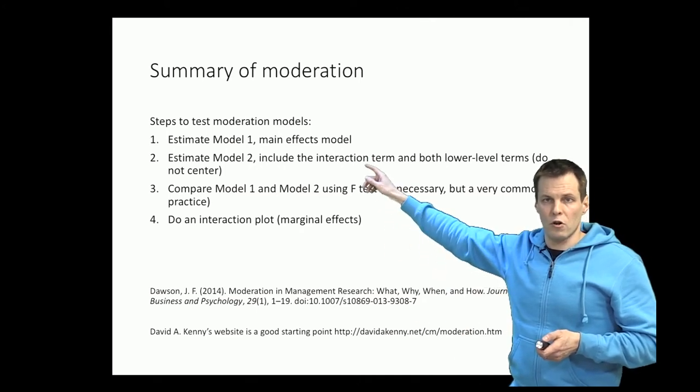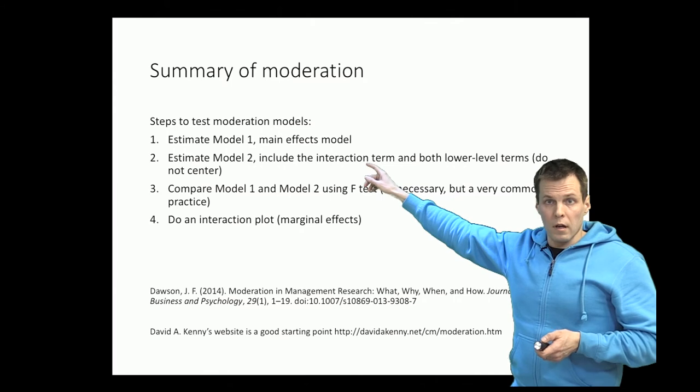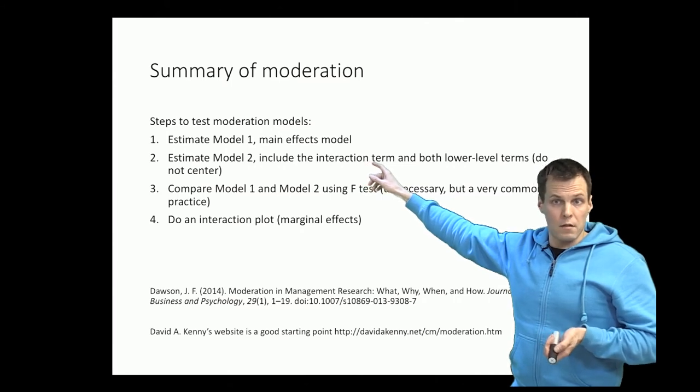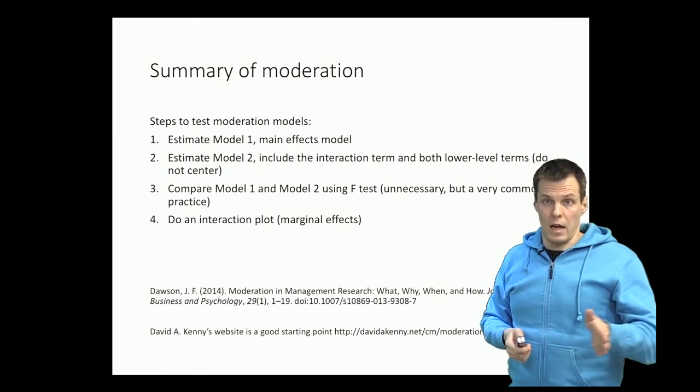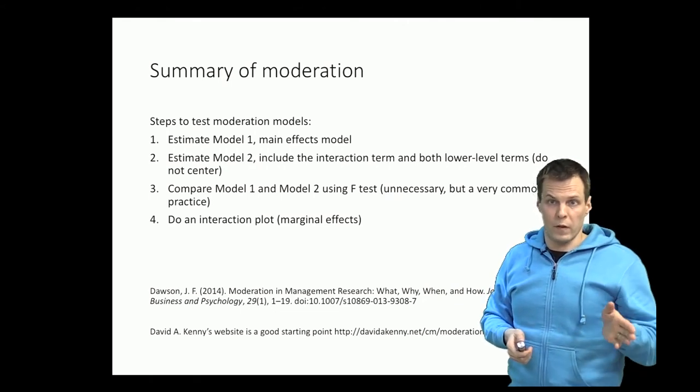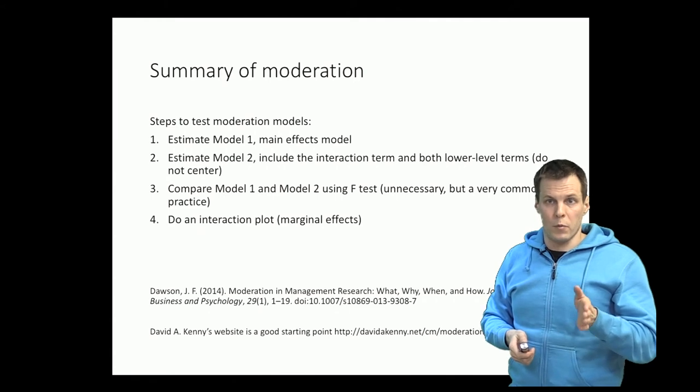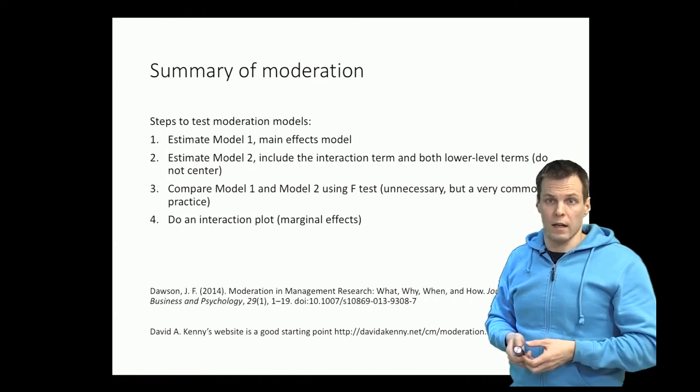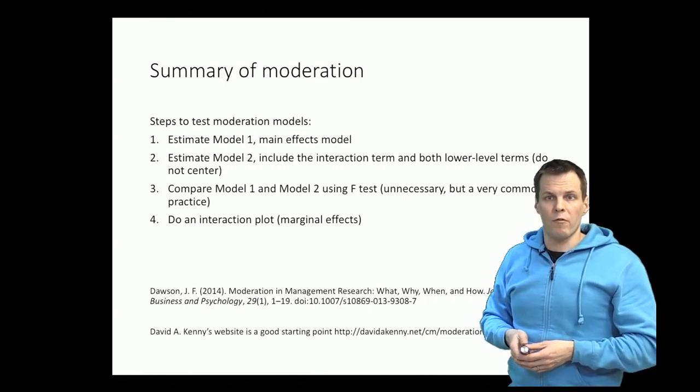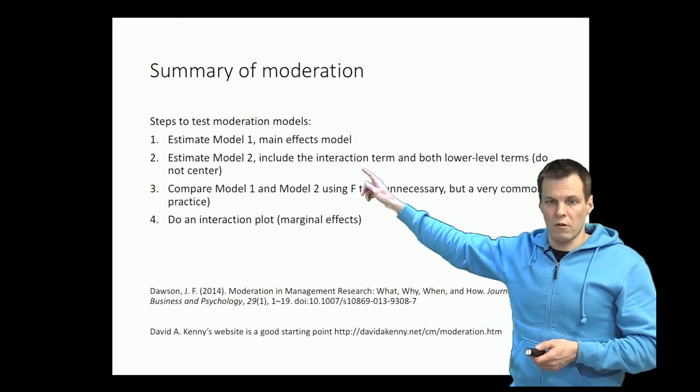Then we estimate model 2, which includes the interaction term and both lower level terms that you use to form the interaction. It is very important to have both x and m, if you have the product of x and m, because otherwise the product of x and m will be confounded with the omitted variable m, if you don't leave that into the model.